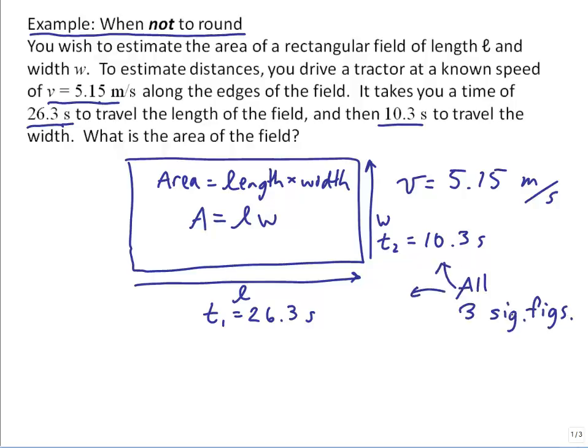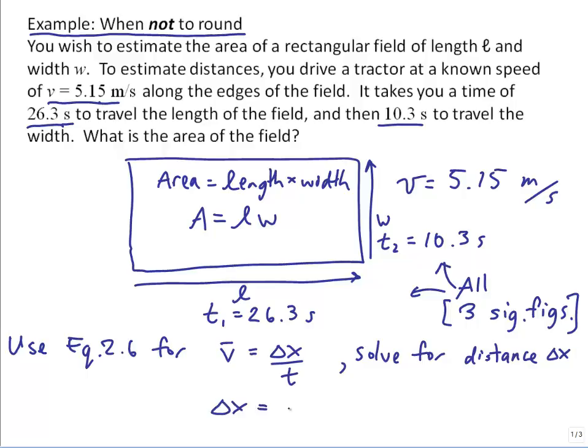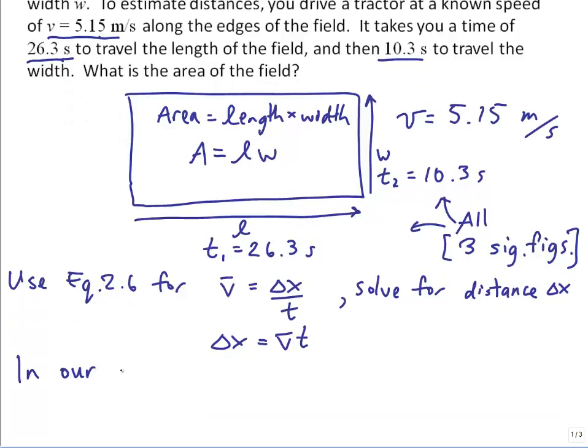Note that all the input numbers are three significant figures, so your final answer should be rounded to three significant figures. I'll start using equation 2.6 for average velocity: v equals delta x over t. But here we want to solve for the distance. We have the speed and the time, so delta x equals v times t. In our case, L equals v times T1, and W equals v times T2.